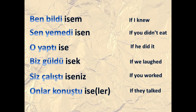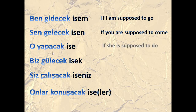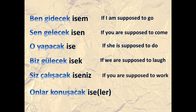The previous section was for present time, and this is for past time. This next section is for future. Ben gidecek isem means 'if I am supposed to go.' Sen gelecek isen means 'if you are supposed to come.' O yapacak ise means 'if she is supposed to do.' Biz gülecek isek means 'if we are supposed to laugh.' Siz çalışacak iseniz means 'if you are supposed to work.' Onlar konuşacak ise — or with 'lar ise' or 'larsa' — means 'if they are supposed to talk.'